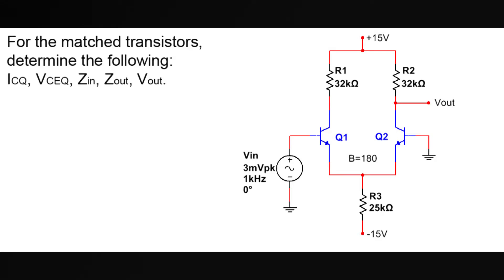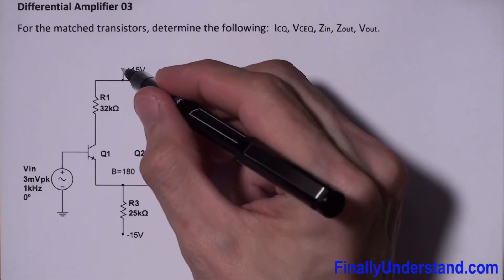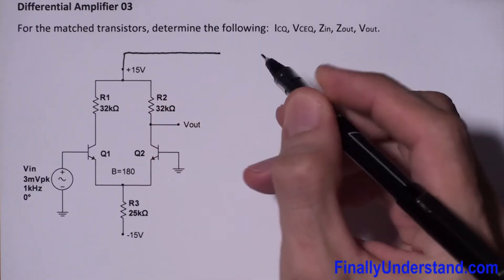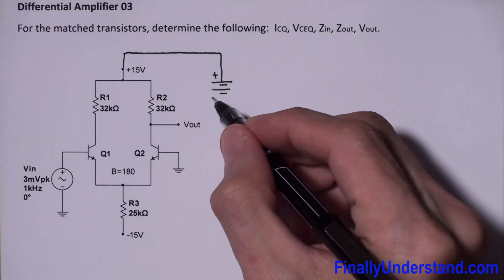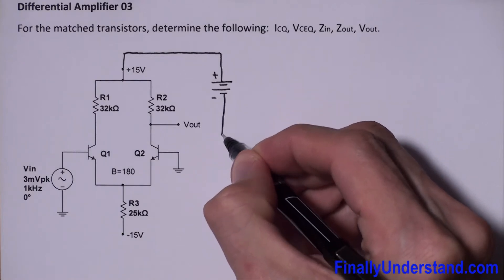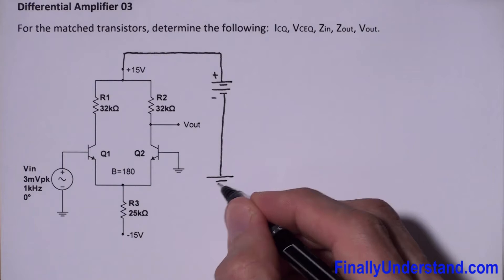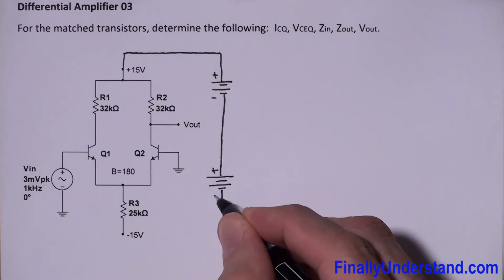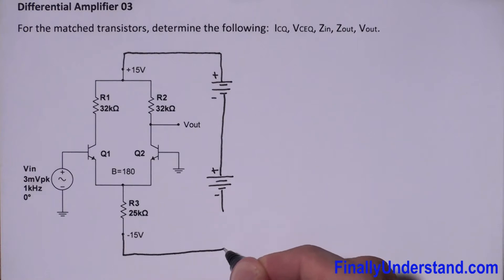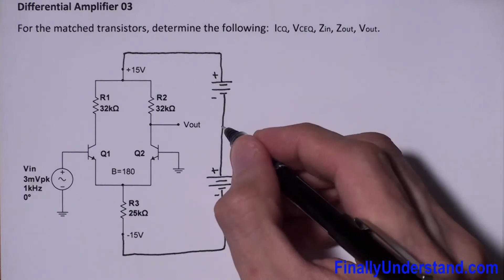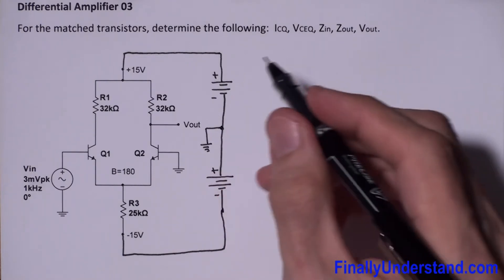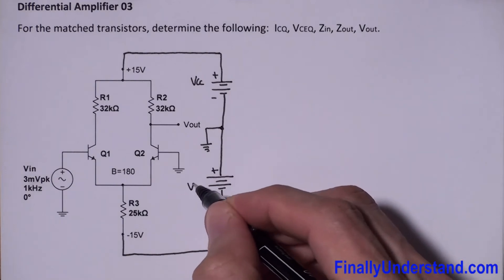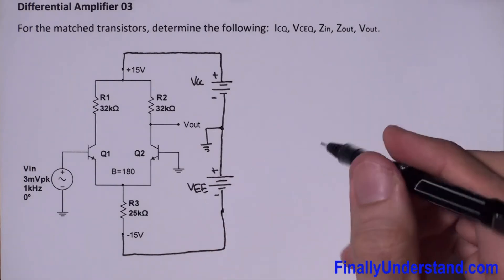Let's take a look at this example. We are going to start by drawing the voltage sources. This is my VCC — positive terminal on top, negative on the bottom — and this is my VEE, with its positive and negative terminals. The connection between the two voltage sources is my ground.